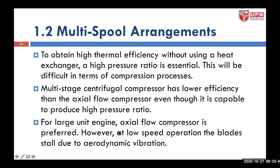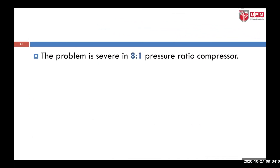At low speed, the blades of the axial flow compressor can vibrate due to aerodynamic vibration because it is not designed to operate at low speed. The problem is severe in an 8 to 1 pressure ratio compressor. So if you want to design a low pressure ratio engine, it is also good to go for the centrifugal type of compressor.